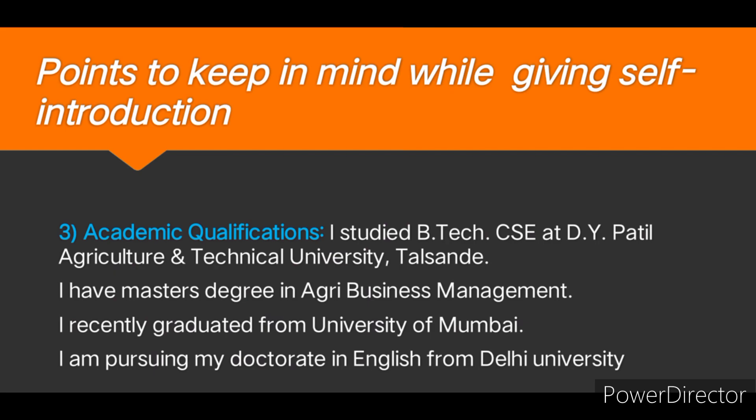Point number three will be in our own introduction about our academic qualifications. For example, here we can write: I studied B.Tech CSE at D.Y. Patil Agriculture and Technical University, Talsande. I have a master's degree in Agribusiness Management. I have recently graduated from University of Mumbai. Today, I am pursuing my doctorate in English from Delhi University. These are the various ways to write our own academic qualifications.